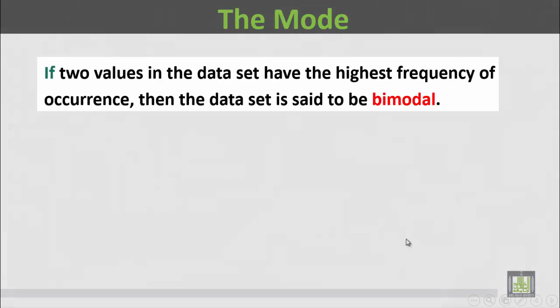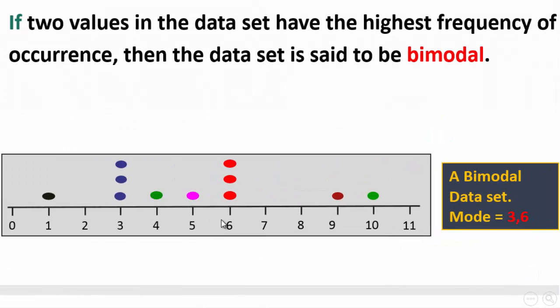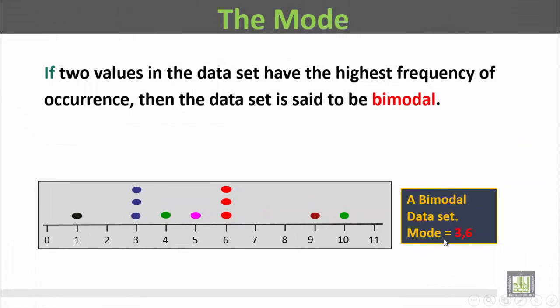If two values in the data set have the highest frequency of occurrence, then the data set is said to be bimodal. In this variable we have three with a frequency of three and six with a frequency of three as well. These two values, three and six, have the highest frequency. So this variable is said to be bimodal with the mode of three and six.